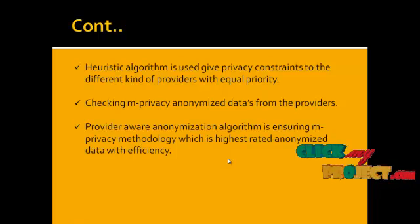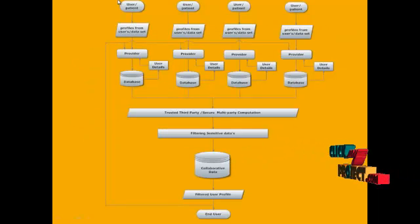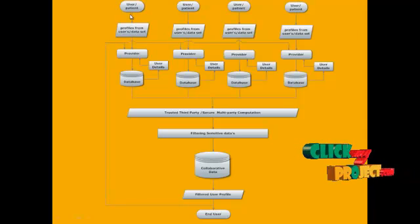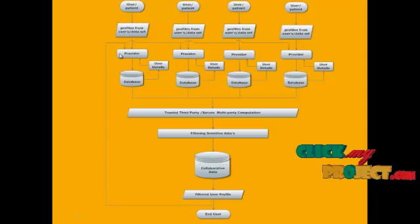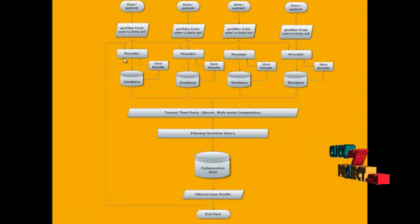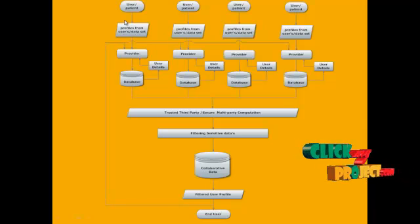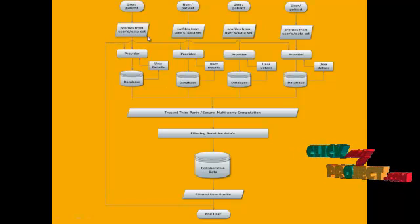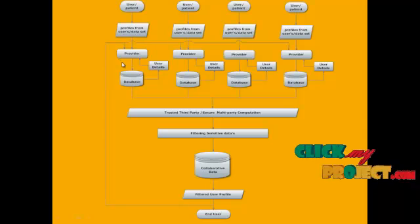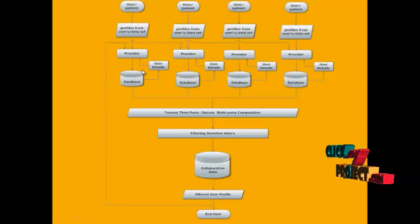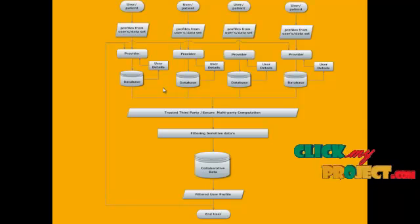Let us see the flow of this project. In this flow diagram, these are pointing to the user end. The user gives their data to the concerned providers. The providers get the full data from the user, which holds sensitive data and non-sensitive data. Sensitive data will affect the user. The provider stores the collected data into their own databases and has full permission to access those databases. So there is a chance to hack the user details. This is called an insider attack.